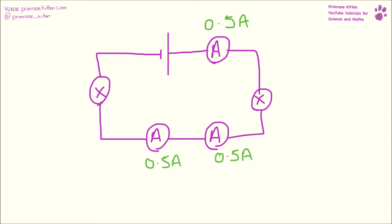Now not every single ammeter is going to give the same reading of 0.5 amps, but if you know one you can work out the others because they're going to be the same.